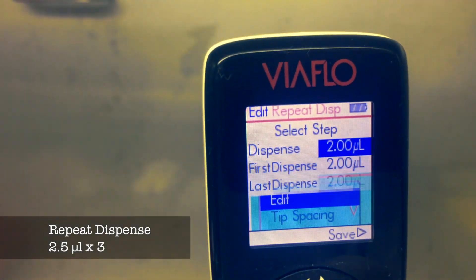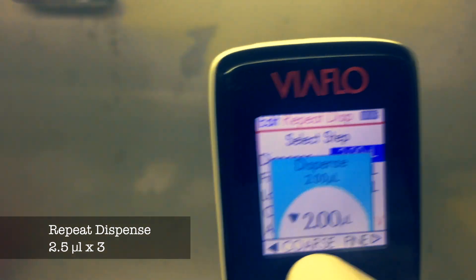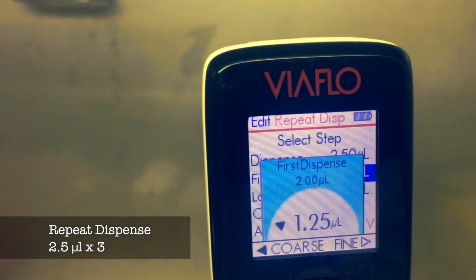Now I need to set the VioFlow Voyager pipette to repeat dispense 2.5 microliters in triplicate.